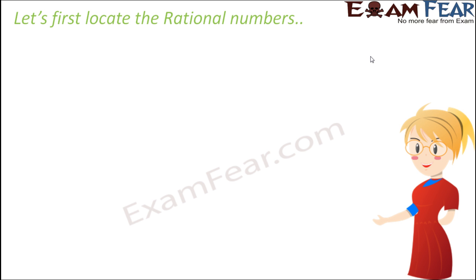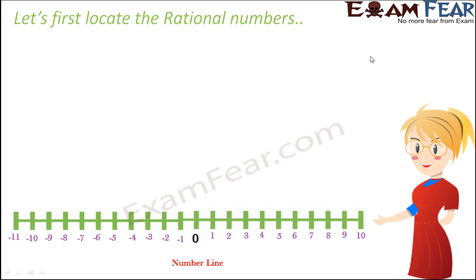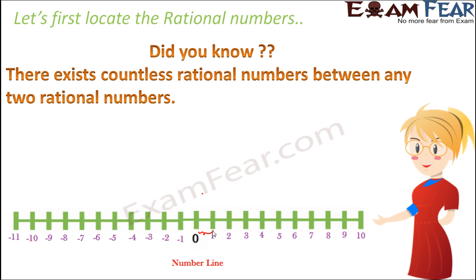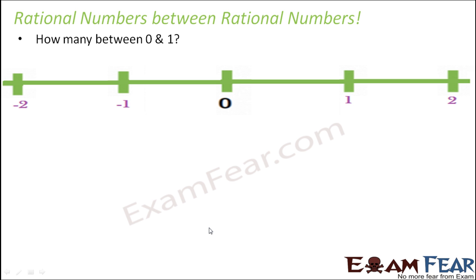Now when we look at this number line in detail, you would see that between any two integers there are... So not only the integers, like it is not only that between 0 and 1 and 1 and 2 you have infinite rational numbers. Between any two rational numbers you can have infinite number of rational numbers. Quite surprising I agree, but let us try to see if that's really true or not.